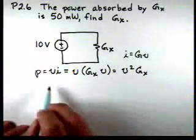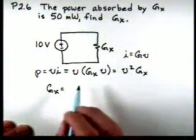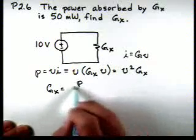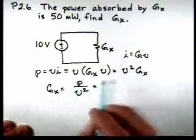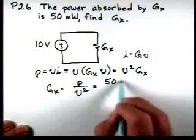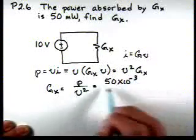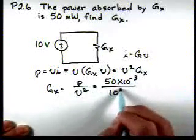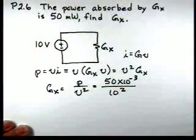So if we solve for GX, GX is going to be P divided by V squared. So we have 50 milliwatts divided by 10 squared.